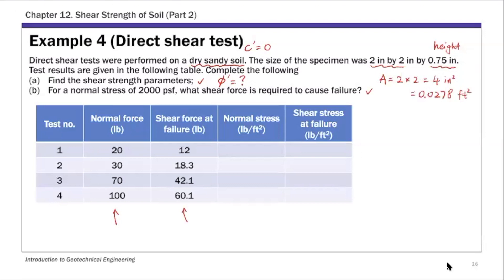That's the cross sectional area of the specimen. Now let's calculate the normal stress and shear stress at failure, then find the shear strength parameter. This normal stress sigma prime equals the normal force Fn divided by cross sectional area.